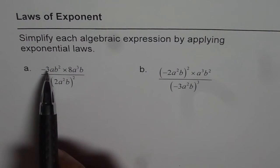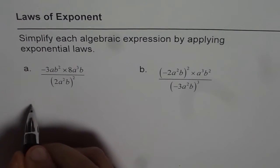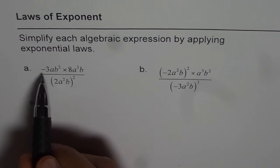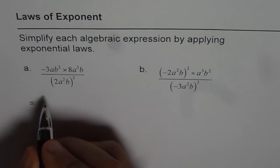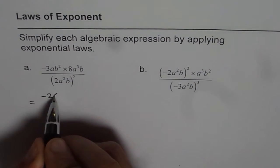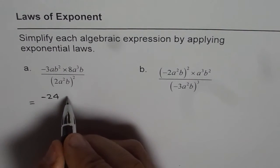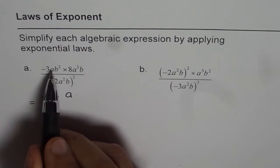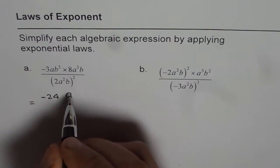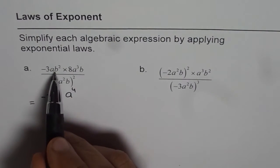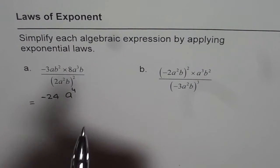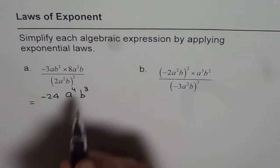Let's first apply the product law on the numerator. So the first one becomes minus 3 times 8 is minus 24. Now, a and a cubed, so we'll combine the exponents of a's, which is 1 and 3, which gives us 4. For b, it is 2 plus 1, right? So 2 plus 1 will be 3.